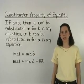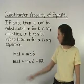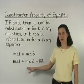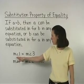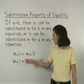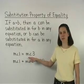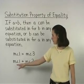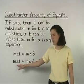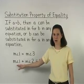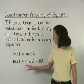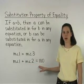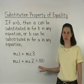For example, let's say we're given two equations: one that states that the measure of angle 1 equals the measure of angle 3, and one that states that the measure of angle 1 plus the measure of angle 2 equals 180 degrees.